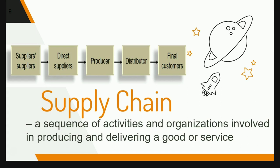In operation management, we will talk about supply chain. What is a supply chain? Supply chain is a sequence of activities and organizations involved in producing and delivering goods or services. Supply chain will include the chain of supplier-suppliers, direct suppliers, producer, distributor, and the final destination will be the final customers or the final users.